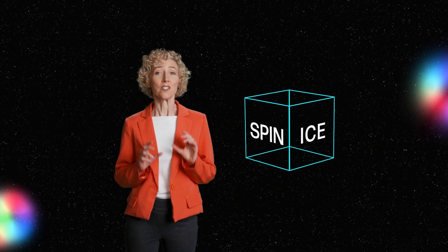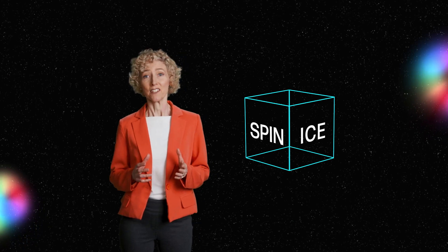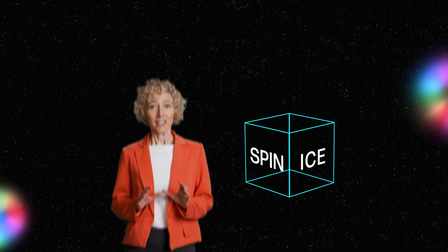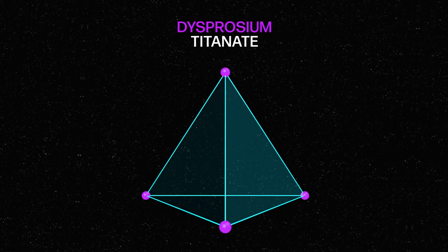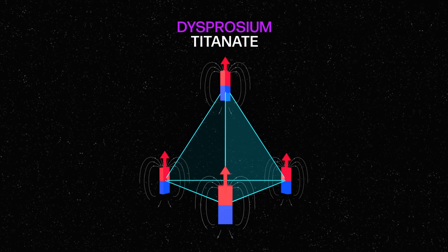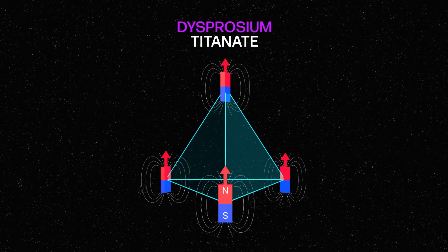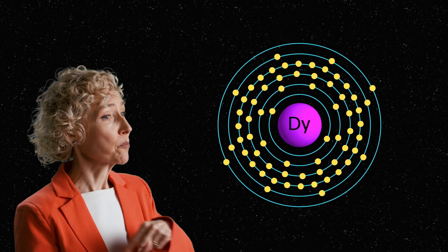Spin ice is very similar. Let's take a closer look at one of the quantum spin ices, dysprosium titanate. Here, the atoms of the rare earth metal dysprosium take the place of the hydrogens. And each dysprosium is like a little atomic scale magnet. It has a north pole and a south pole.